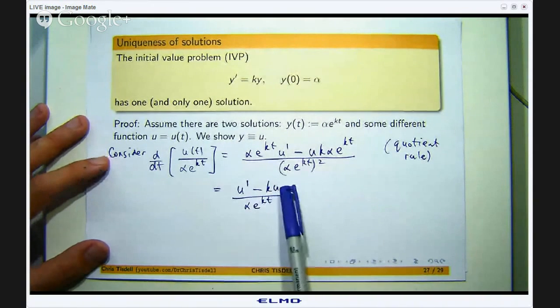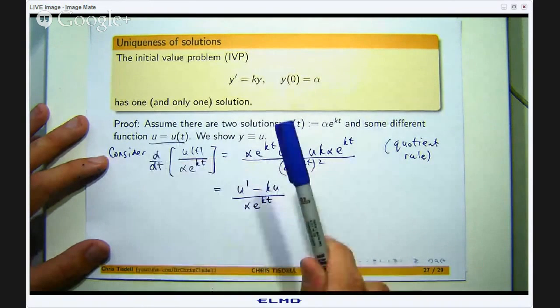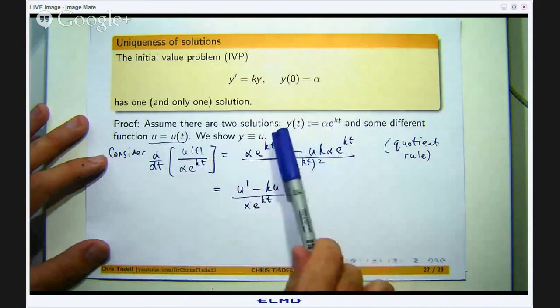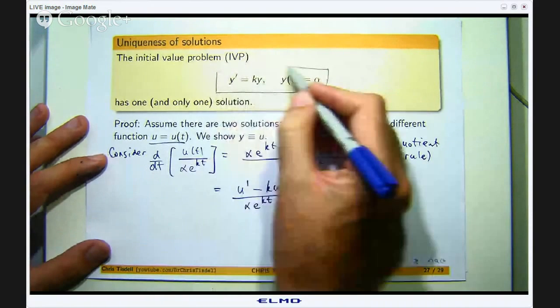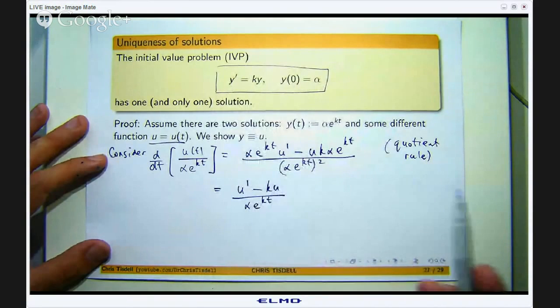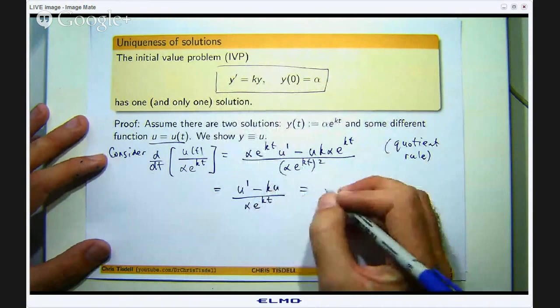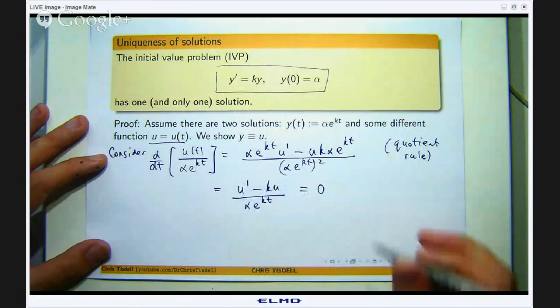Alright, now what is this? We have assumed that u is a solution to this initial value problem. That means that u' equals ku, or u' minus ku equals 0. So this numerator is 0.